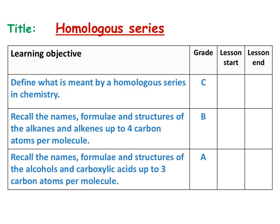This is the ninth video in the Edexcel C3 revision tutorial series. Today we'll be looking at the homologous series, which is the first part of the organic chemistry section of C3. In this video we will look at what we mean by a homologous series in chemistry, the names, formula and structures of alkanes and alkenes for up to four carbon atoms, and alcohols and carboxylic acids for up to three carbon atoms per molecule.